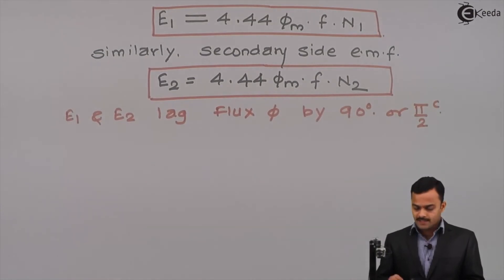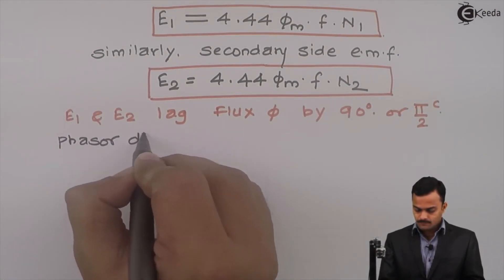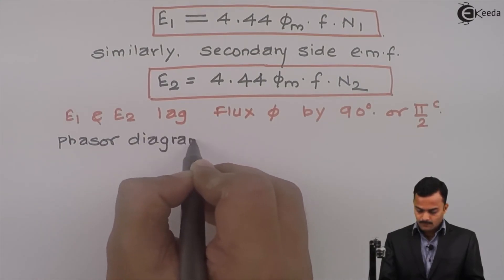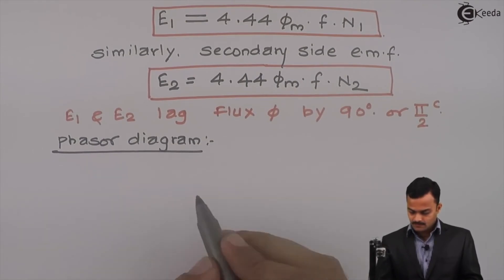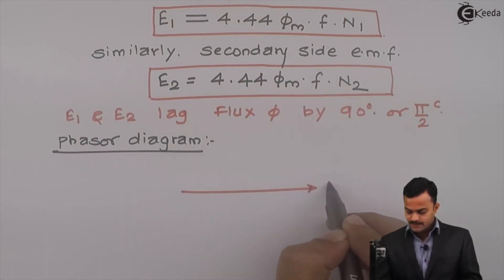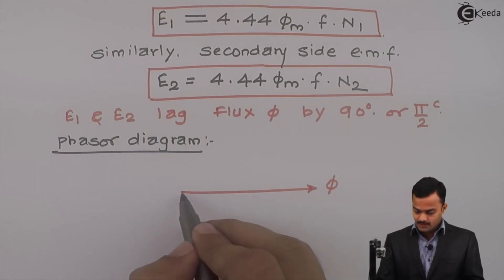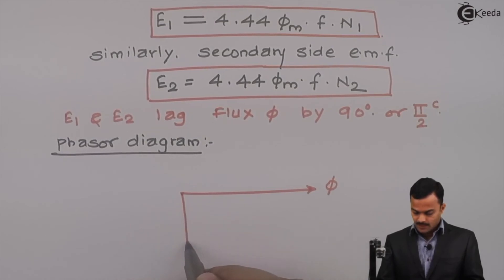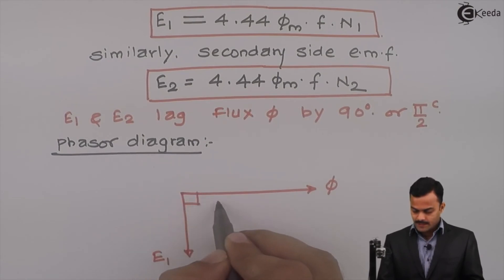If you draw a phasor diagram, it will be like this: reference is flux phi, and EMF induced because of this flux phi, even at the primary side, that will lag behind this phi by 90 degrees.